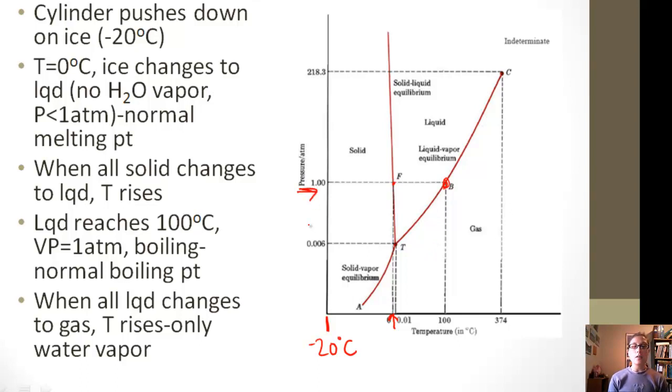This is called the normal boiling point, and this is where boiling will occur. Now we have some vapor. When all the liquid has then changed to a gas, the temperature will rise again, and now we have only vapor at this higher temperature.